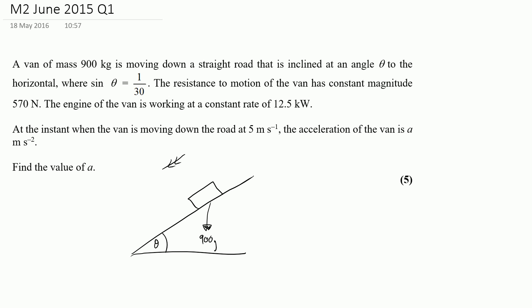We've got a resistance to motion of a constant magnitude so I've got a force that's applied against the motion which is 570 newtons and I'm also told that the engine of the van is working at a rate of 12.5 kW.